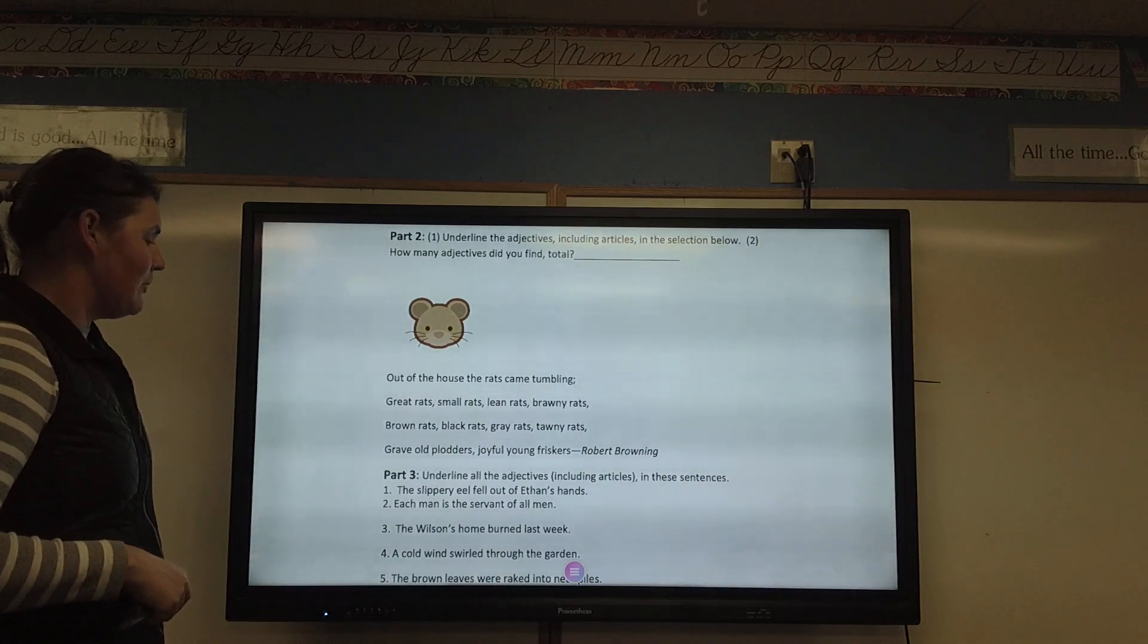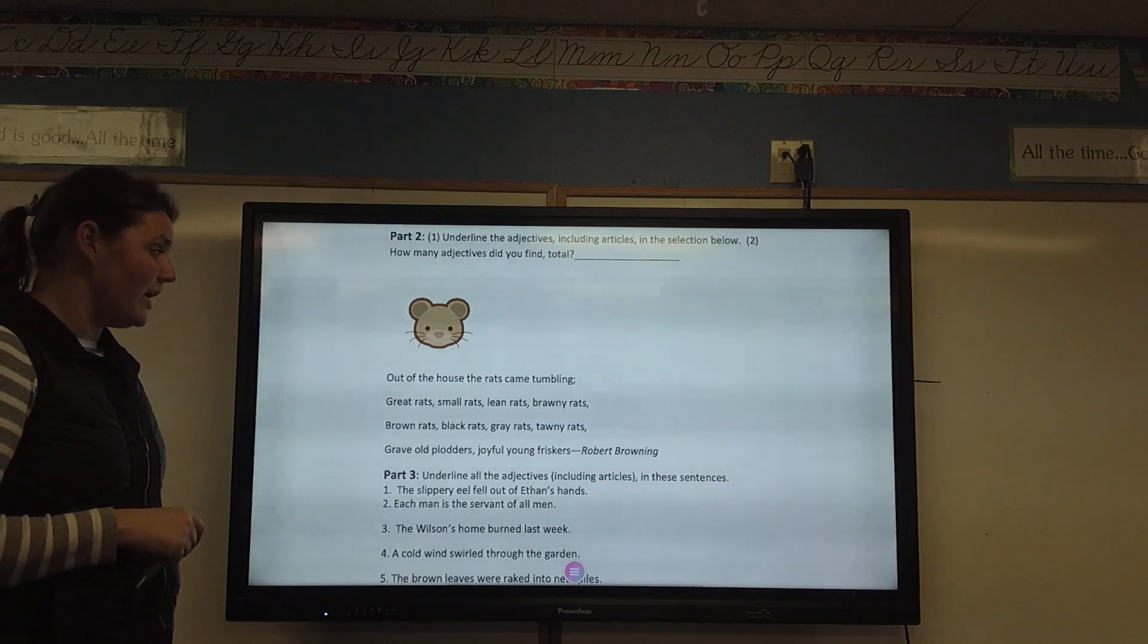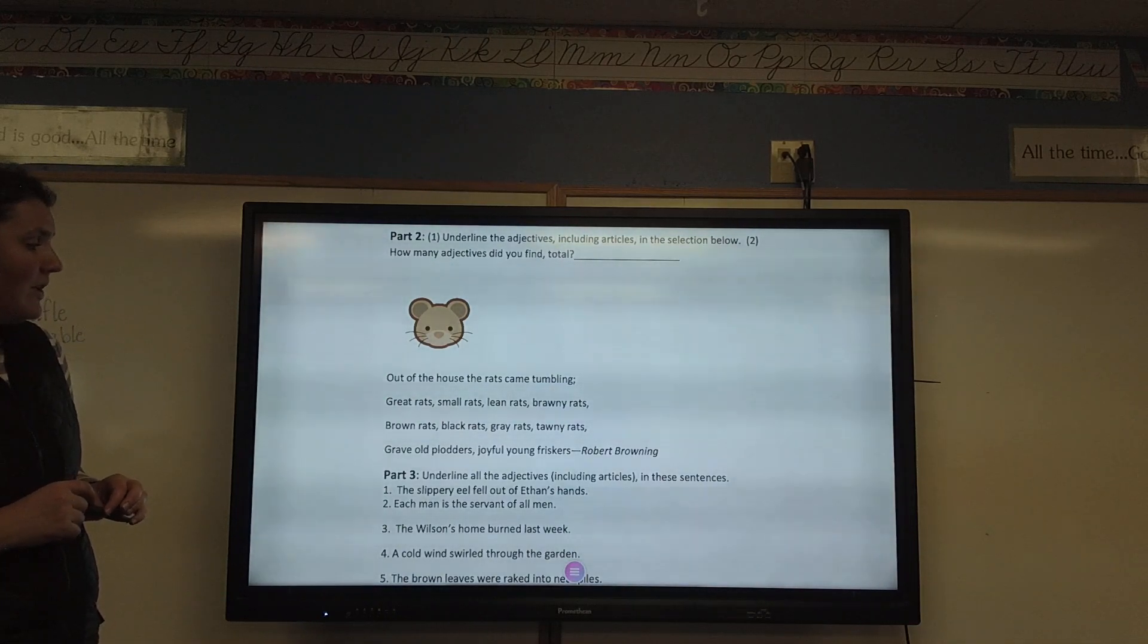Out of the house, throughout, rats came tumbling. Great rats, small rats, lean rats, brawny rats, brown rats, black rats, gray rats, tawny rats. Great old prodders, joyful young friskers.